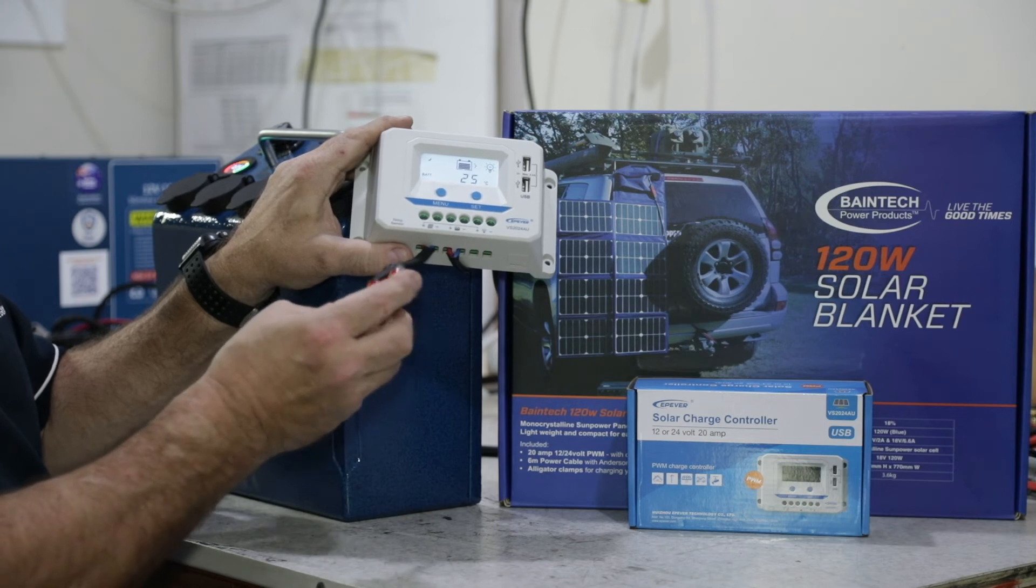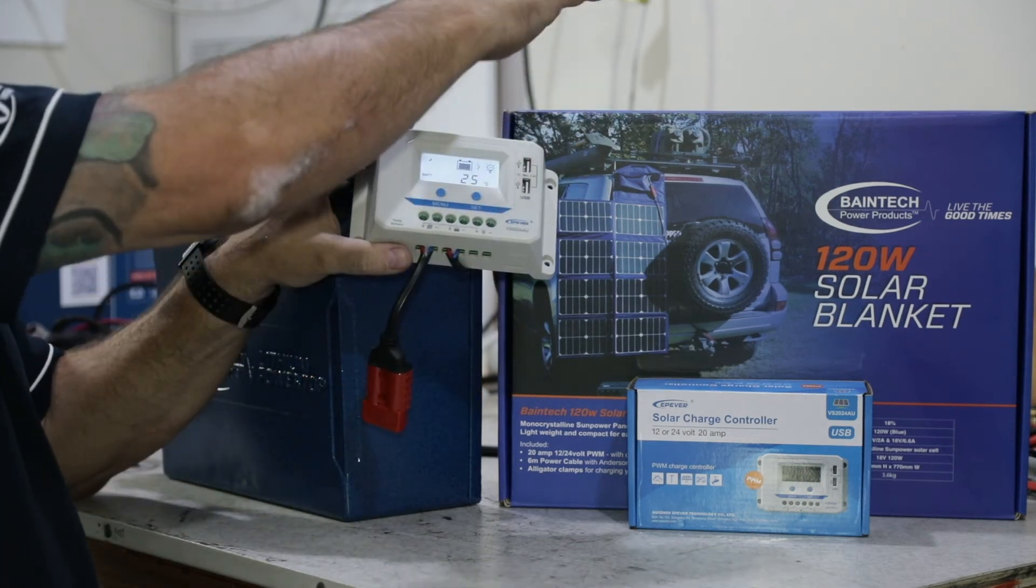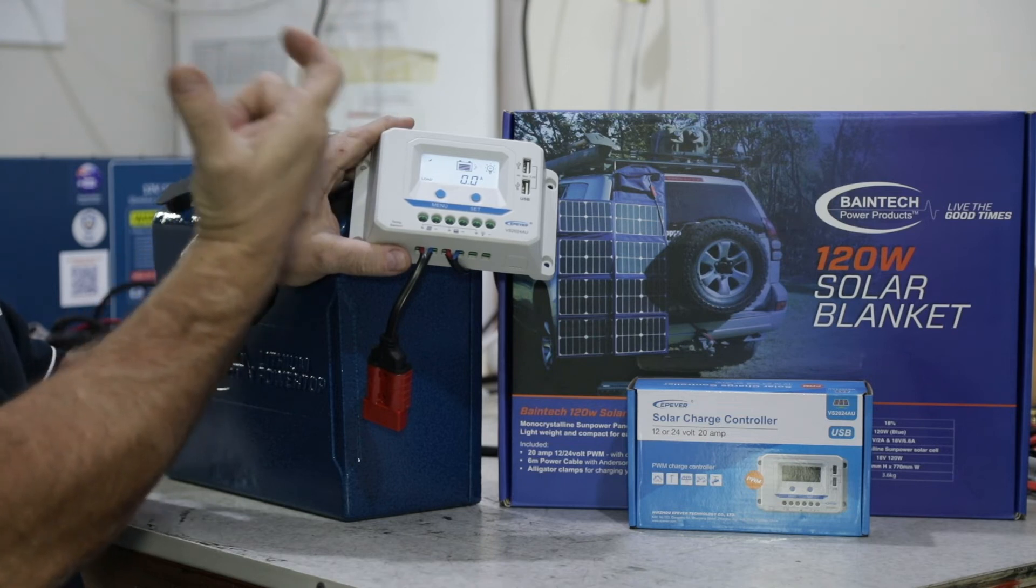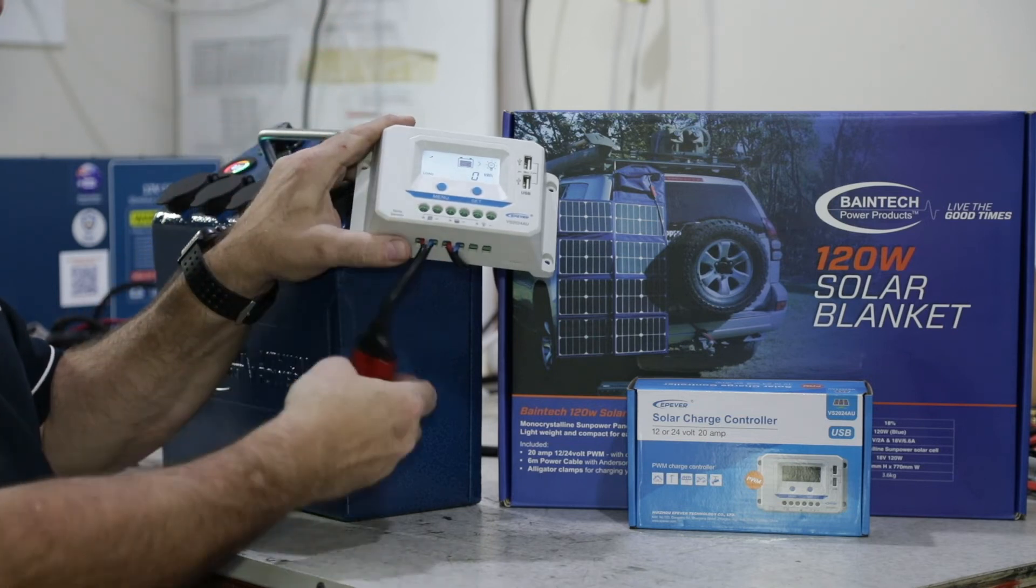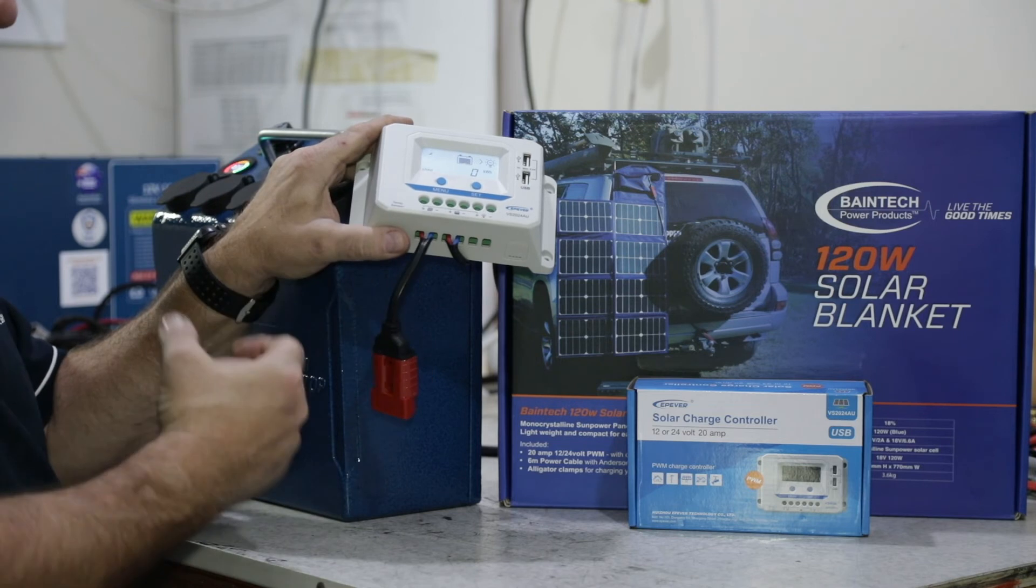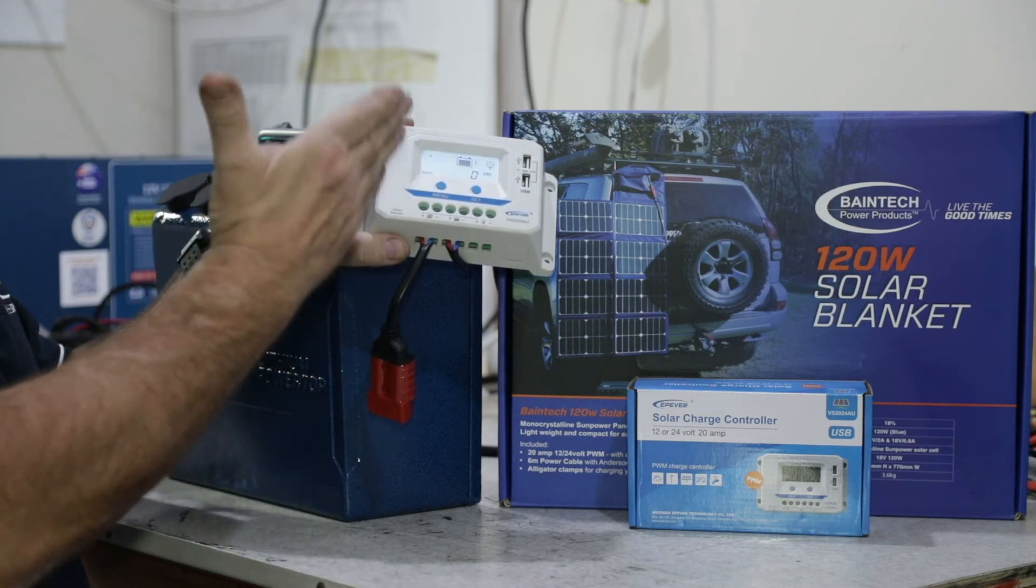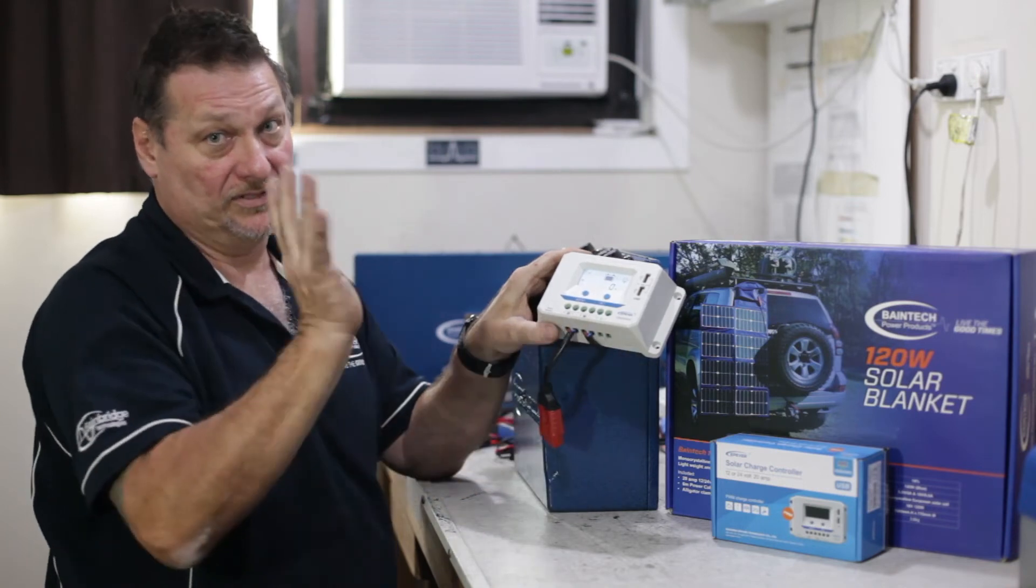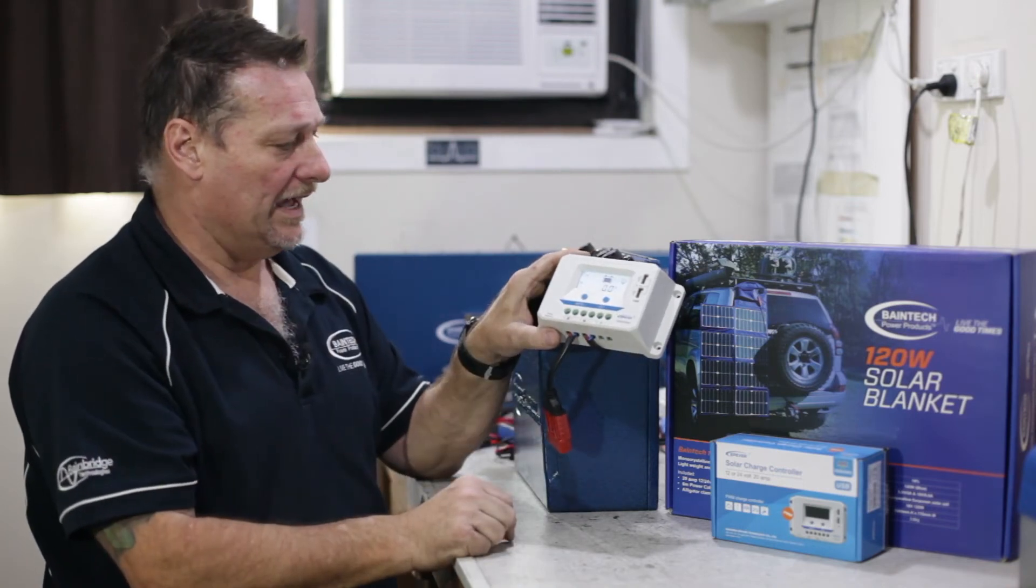The only other connection I would then need to make is from the solar blanket. Out of the solar blanket it has a red Anderson plug because it's raw, so it's raw power. Different colored Andersons won't plug into each other. The raw power means it's anywhere from 18 to 20 odd volts and you don't want to plug that into the 12 volts because you'll have a bit of a spark and an arc and a bit of shock.